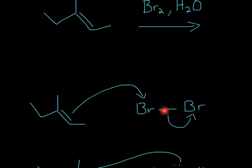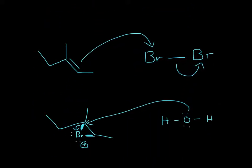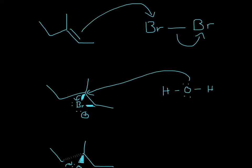Notice how the double bond goes completely to the other bromine. So what will happen is it will form a bridge formation — a bromonium bridge. Notice how these are both wedges.